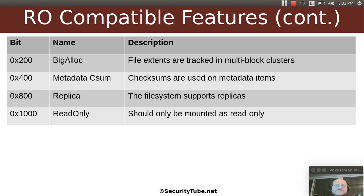Other possibilities: Big ALEC. In the Big ALEC feature, file extents are tracked in multi-block clusters. We'll talk more about extents in a future video, but essentially what extents do is allow you to more efficiently store large files by storing a list of sectors — or in the case of Big ALEC, a list of clusters. Metadata CSUM means checksums are used on all the metadata items if this feature is enabled.